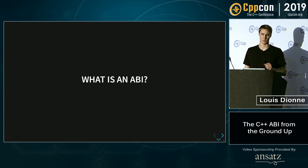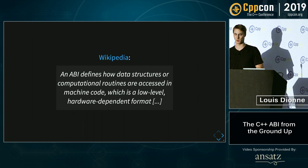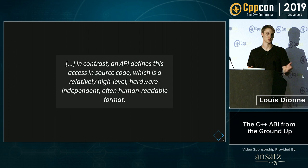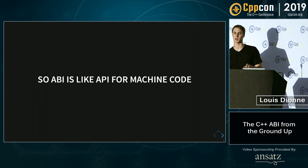So before we start, what's an ABI? Wikipedia says that an ABI defines how data structures and functions are accessed at a low level — at a machine code level. In contrast, an API defines how data structures and functions can be accessed at a human-readable, high level. So there's really a parallel between the two.